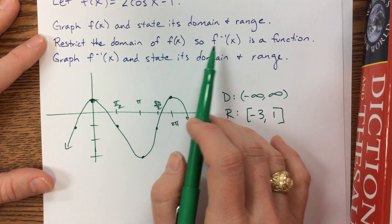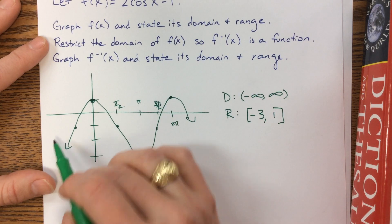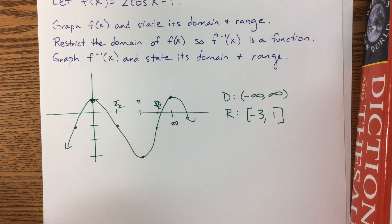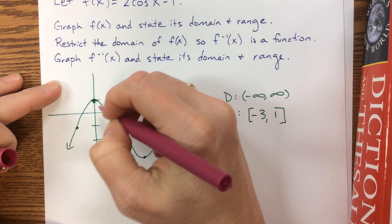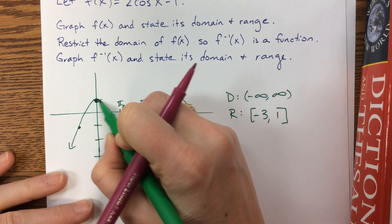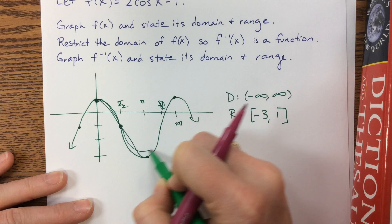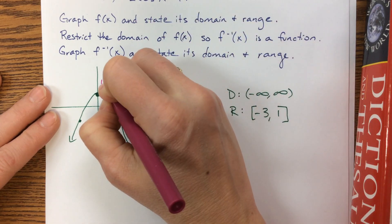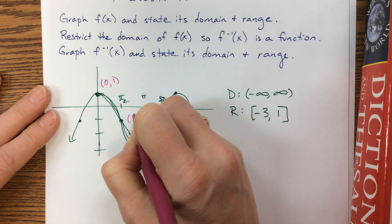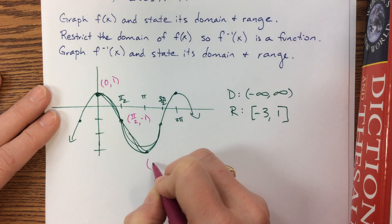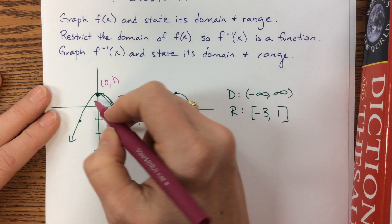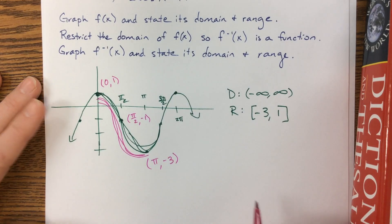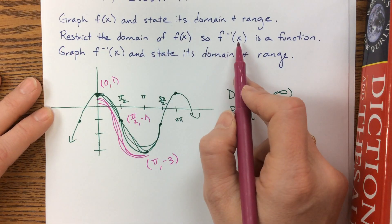But when they say restrict the domain of f so that the inverse is a function — if I tried to take the inverse of this as-is, I'd get something squirrely and it wouldn't be a function, which is no good. This is concave down and this becomes concave up. What we're going to do is get every y-value to happen just once. So this is the point (0, 1), here is the point (π/2, −1), and here is the point (π, −3). We're going to restrict the domain to just this interval because that gives us every y-value, but every y-value only happening one time.